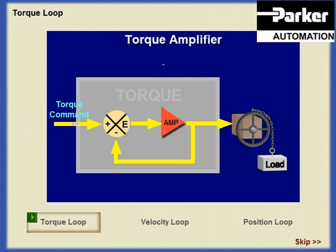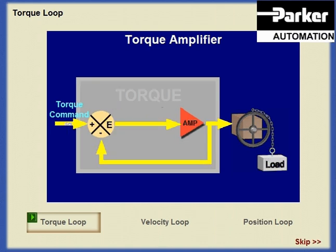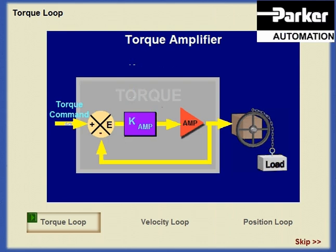The actual torque response of the system depends on how strongly the error signal is amplified. This parameter is called the amplifier gain. Amplifier gain is user adjustable on almost all servo systems.